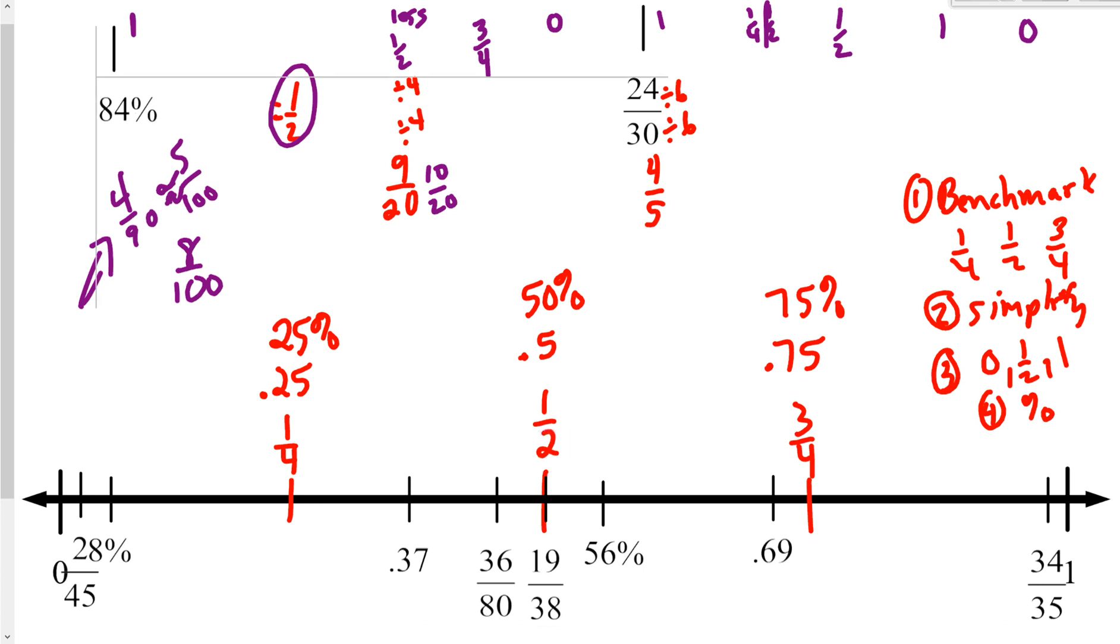So now I have two left. I have 84%, and I have 24/30. Now, both of those, I know, are near one whole. Now, let me just erase some of these things around, so I'm kind of getting in the way. Now, I know, as a reminder, that this was four-fifths.